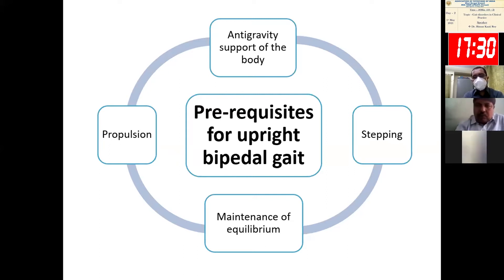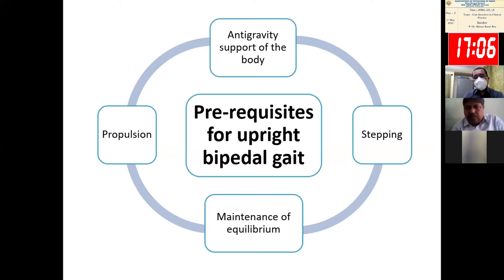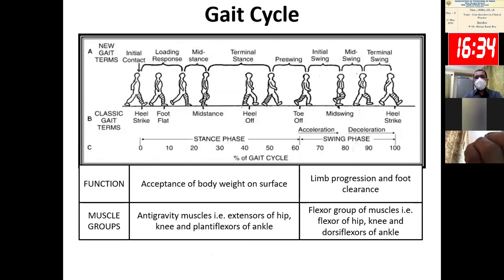The basic requisites for normal bipedal gait are: first, you must have good antigravity support of the body so that you can maintain an upright bipedal posture from squatting or lying down position. Next is stepping, which involves touching the sole on the ground and shifting the center of gravity. Third is maintenance of equilibrium, because when a person walks there is continuous shifting of the center of gravity. And the fourth is propulsion, which involves both forward movement as well as alternate lateral movements of the trunk.